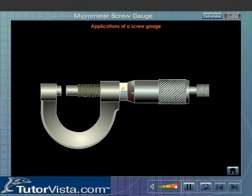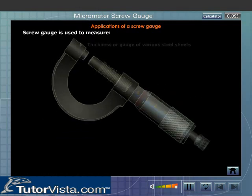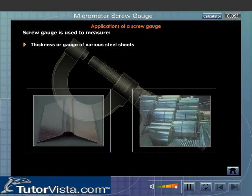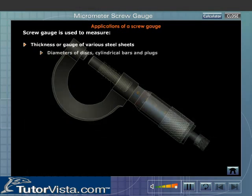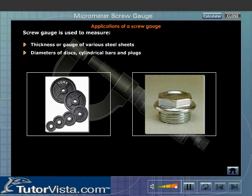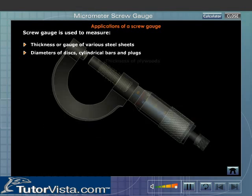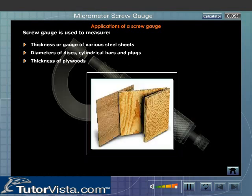Applications of a Screw Gauge. A screw gauge is used to make more accurate measurements of dimensions of objects. In engineering industries, thickness and diameters of objects are found out using the screw gauge. Screw gauge is used to measure thickness or gauge of various steel sheets, diameters of discs, cylindrical bars and plugs, thickness of plywood used in carpentry.